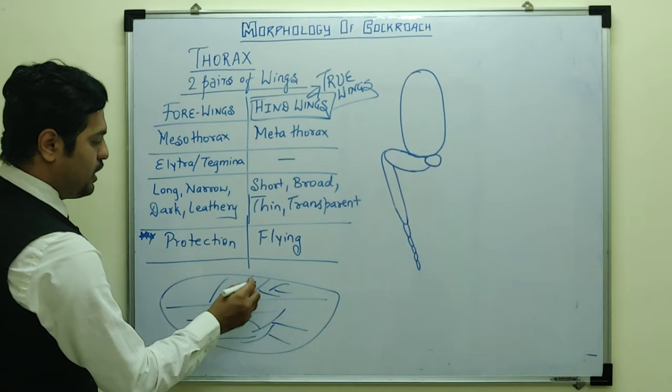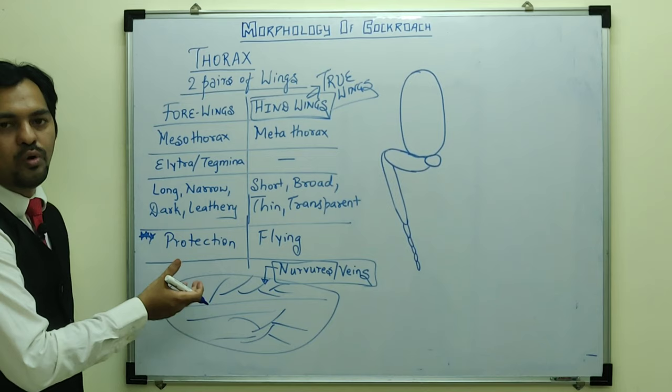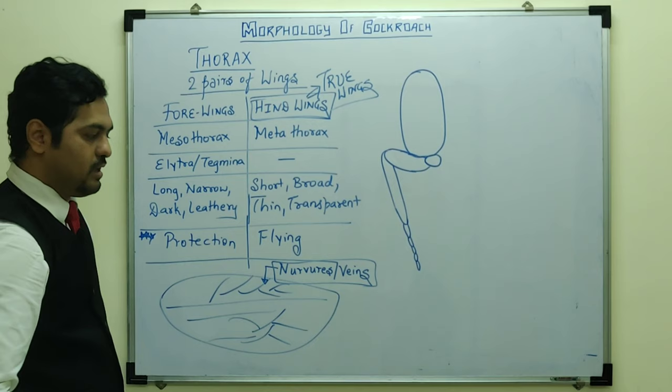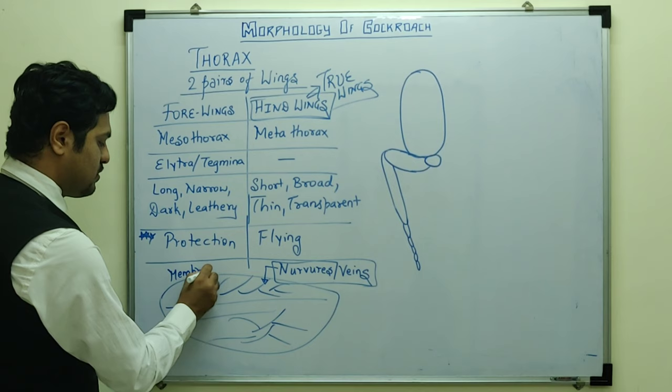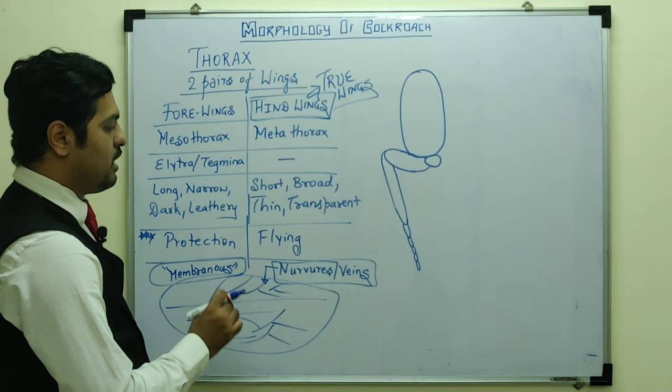Within the wings, there are many tubules called nervures or veins. Hemolymph fluid passes through these veins. There is also presence of tracheae for gas exchange. Wings are membranous outgrowths of the body wall — membranous outgrowths from the thoracic body wall — and the tubules within are called nervures or veins carrying hemolymph.